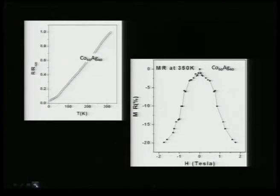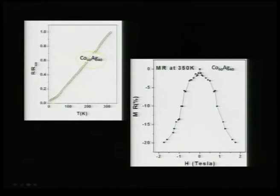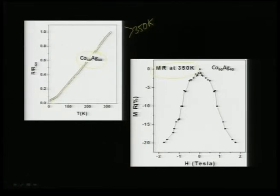For a 60 percent cobalt-doped silver alloy (60-40 alloy) you see a very nice trend of metallic behavior down to 4 K. We tried to measure the magnetic property and Tc for this alloy. The Tc is reported to be above 350 K; because of measuring constraints one cannot measure magnetoresistance beyond 350 K. Near Tc, this granular alloy shows a pronounced effect of up to 20 percent MR in bulk cobalt-silver composites.